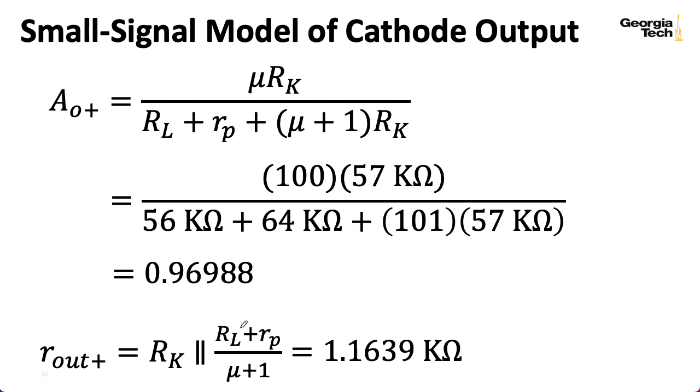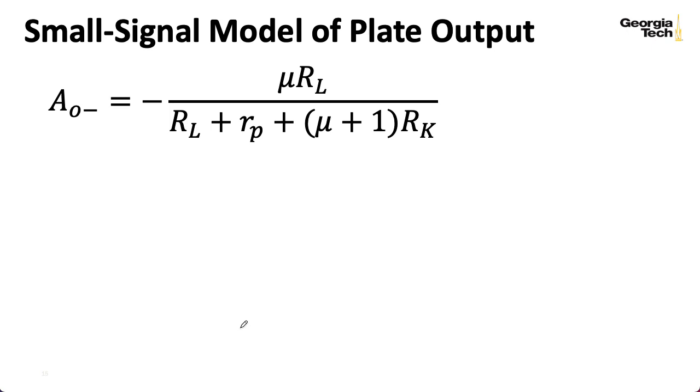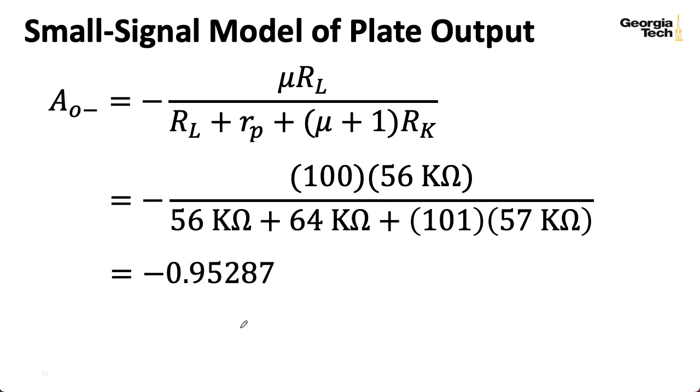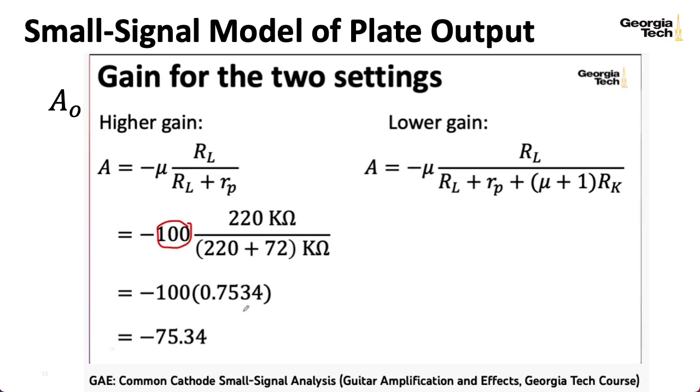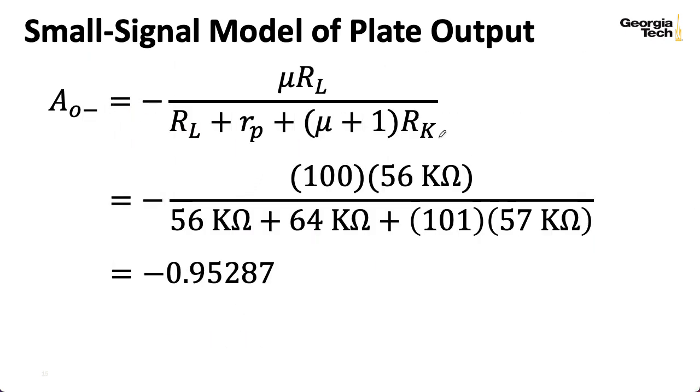Now, what about the plate side? If I were to plug our numbers in for this formula that we computed for the common cathode stage, I wind up with minus 0.95 something. So again, this is pretty close to a magnitude of 1. Not quite, but pretty close. Now, remember, we've previously looked at common cathode stages as means of getting big amounts of gain. Here, we're deliberately using a really big cathode resistance in order to keep the gain actually to be less than 1. So this is a very different use of this kind of formula.